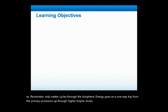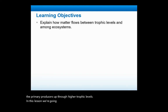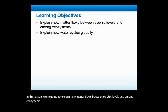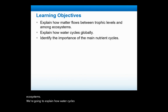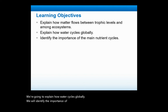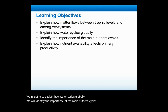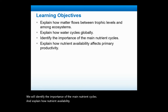In this lesson, we're going to explain how matter flows between trophic levels and among ecosystems. We're going to explain how water cycles globally. We will identify the importance of the main nutrient cycles and explain how nutrient availability affects primary productivity.